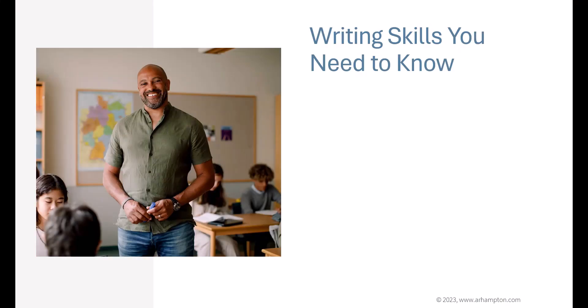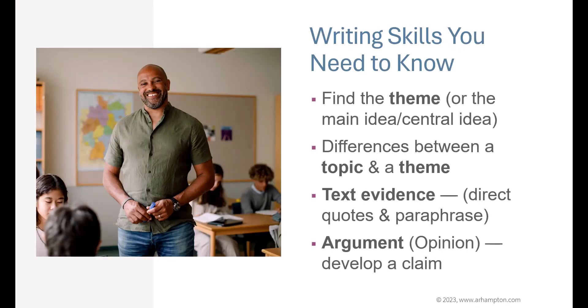Here are the writing skills you need to know. Find the theme, main idea, or central idea of a reading passage. Know the differences between a topic and a theme. Text evidence — either direct quotes or paraphrasing the text. You need to be able to identify direct quotes from the text, and summarize it in your own words if you are not directly quoting it. That's what paraphrase is — putting it in your own words without directly quoting it.